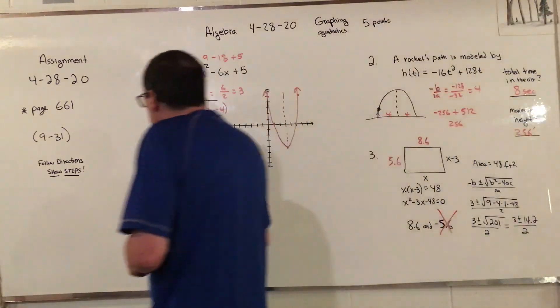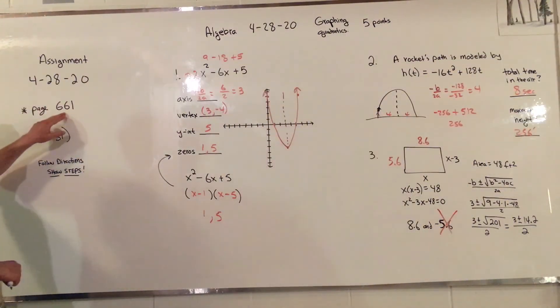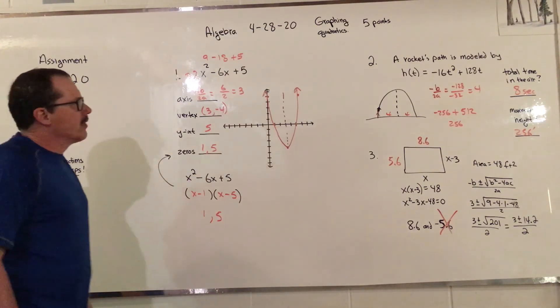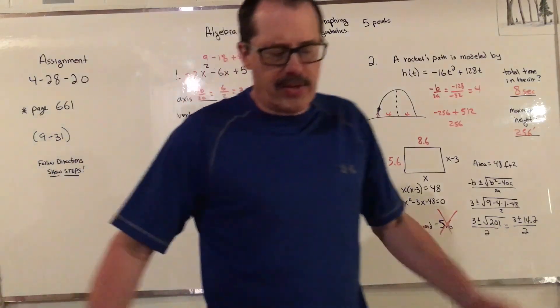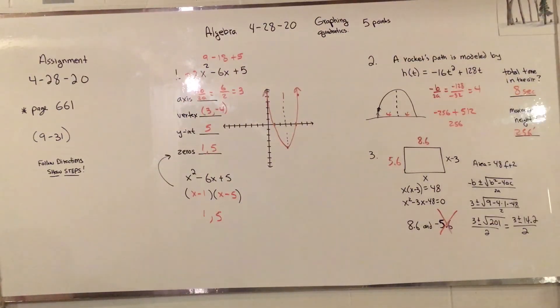Your assignment is page 661, go from 9 to 31. Follow the directions, show steps. There's a couple where all you have to do is put answers in, but most of them you need to show steps and show your work on it. I didn't give you any graphing, they're all just the review of what we've been doing. Have a great Tuesday and hope you do really well on that.